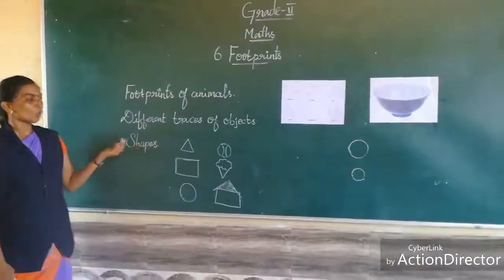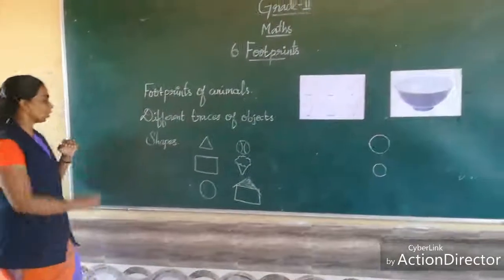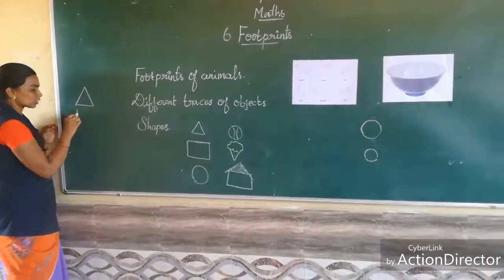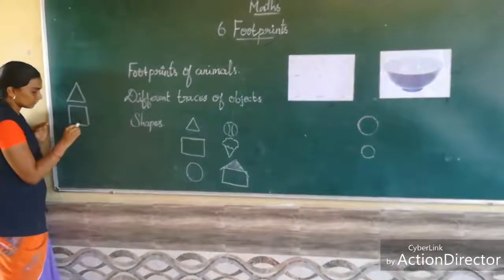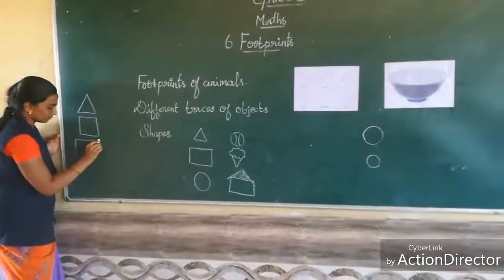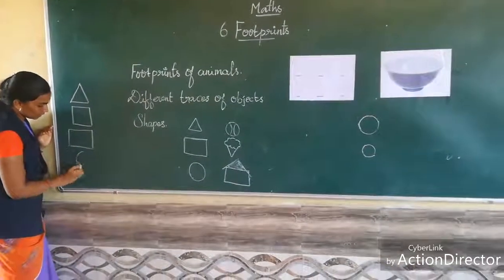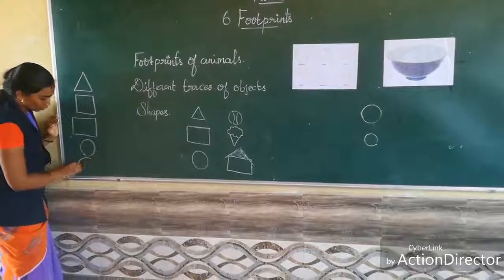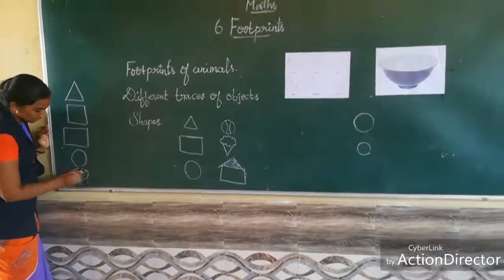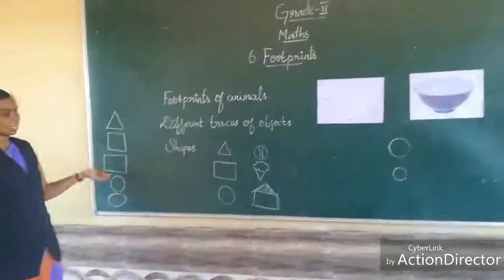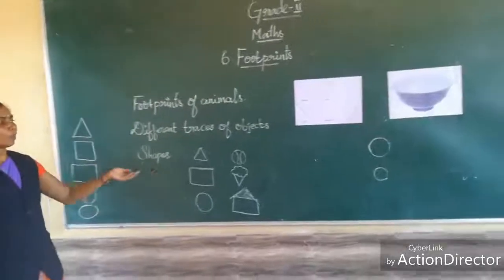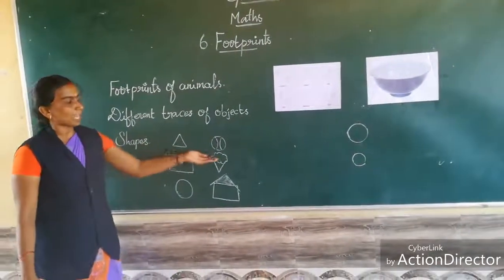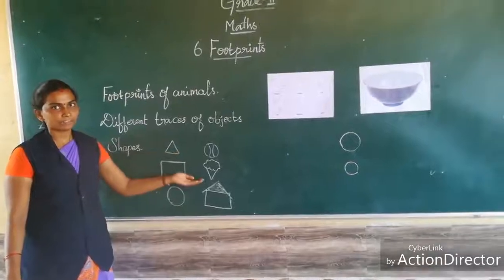Next, shapes. What are the shapes we know? We know triangle, square, rectangle, circle. These shapes we already know. Now I am going to introduce shapes and figures.